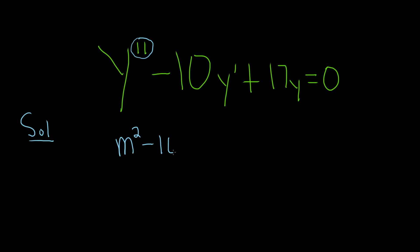And then minus 10. This is the first derivative, so it's just m to the 1. And then you can think of y as the 0th derivative, so it would be m to the 0, which is 1. So you just put the 17. You don't have to worry about m's when there's a number.